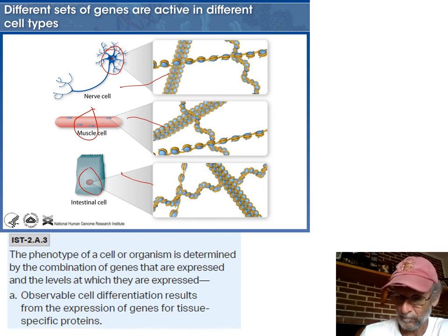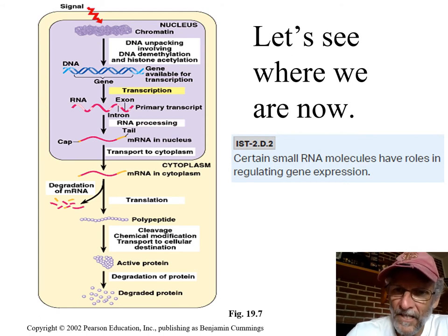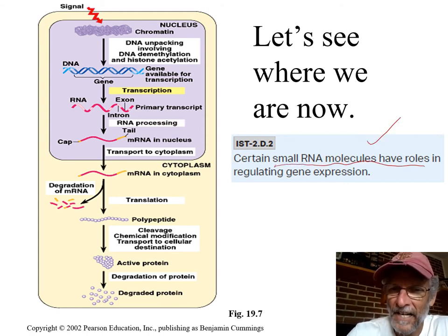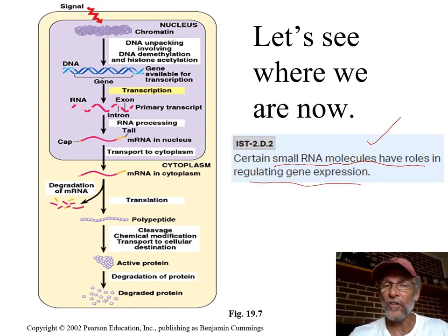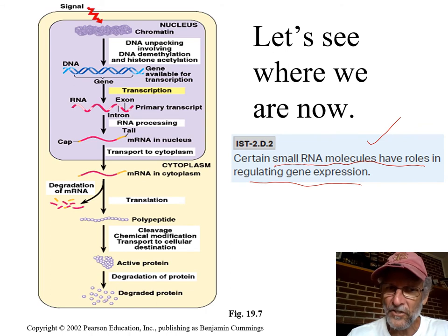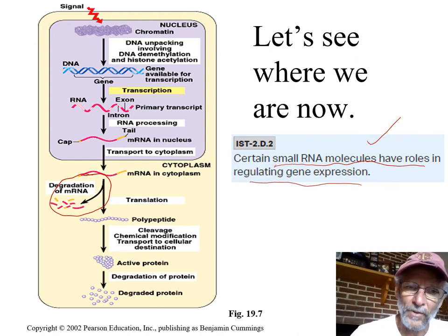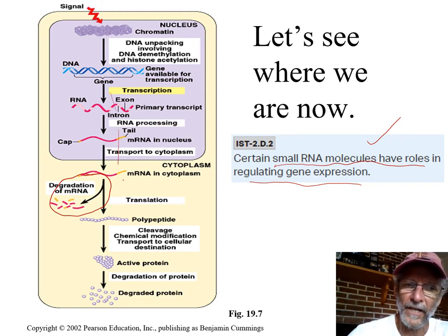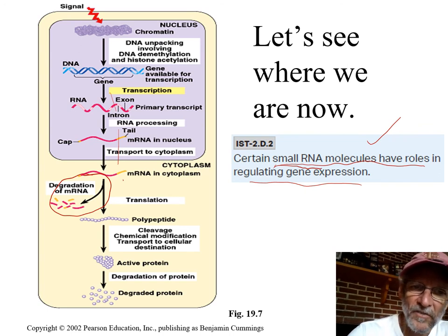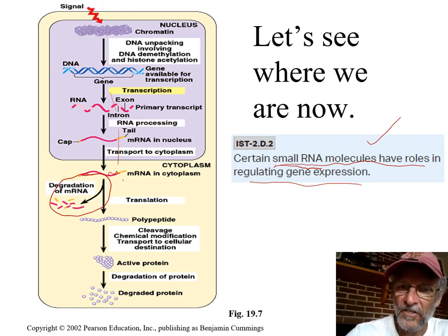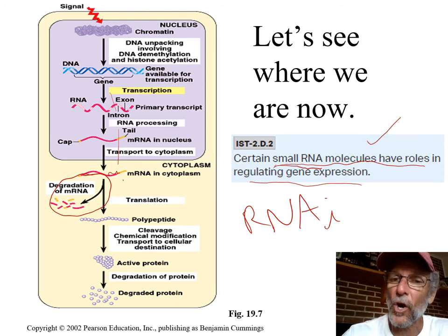Now we have this one simple sentence: certain small RNAs can have roles in regulating gene expression, and that is all the detail they go into. Regulation always means the same thing — turn on or off. We talked about this: slicer and dicer can chop up this messenger RNA. So now we are post-transcriptional — transcription already happened — but this RNA might get chopped up, or these small RNAs might jump on it and block a ribosome. Either way, this is called RNA interference, and these are always off switches.